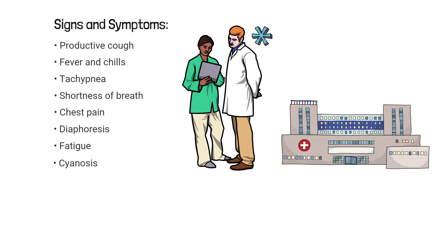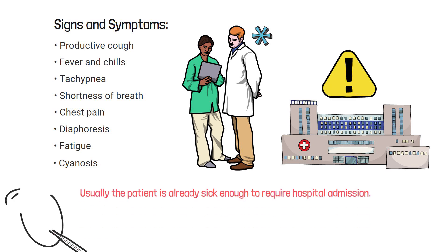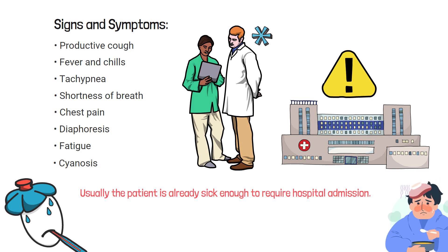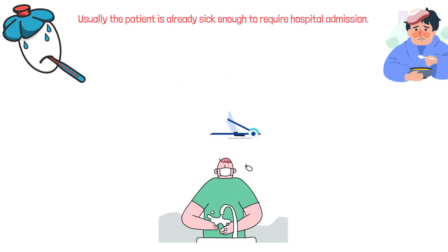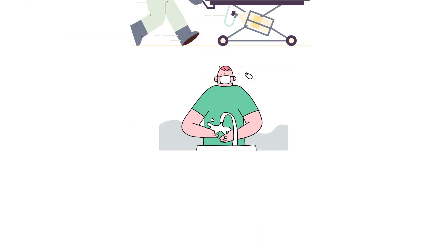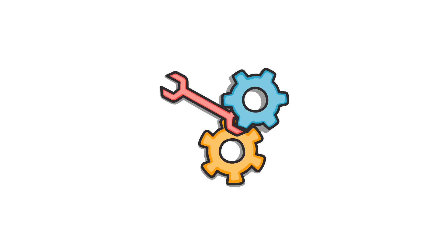Hospital acquired pneumonia is often more severe because usually the patient is already sick enough to require hospital admission. In some cases, these patients are more susceptible due to an already weakened immune system. Unfortunately, hospital acquired pneumonia is often spread to the patient by healthcare workers when they pass germs from their hands, clothes, or instruments. This can be avoided with proper hand washing, PPE, and other safety measures.